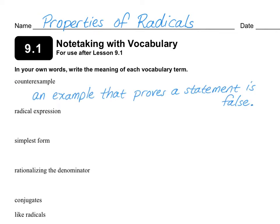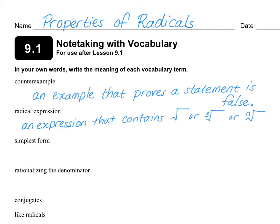A counterexample is an example that proves that a statement is false. We have been doing counterexamples quite a bit this year, and you will use them a lot when you get into geometry next year. A radical expression is an expression that contains a square root symbol, or a third root symbol, or really any root — we could have a 4 here, or a 5, etc. So any root is a radical expression.